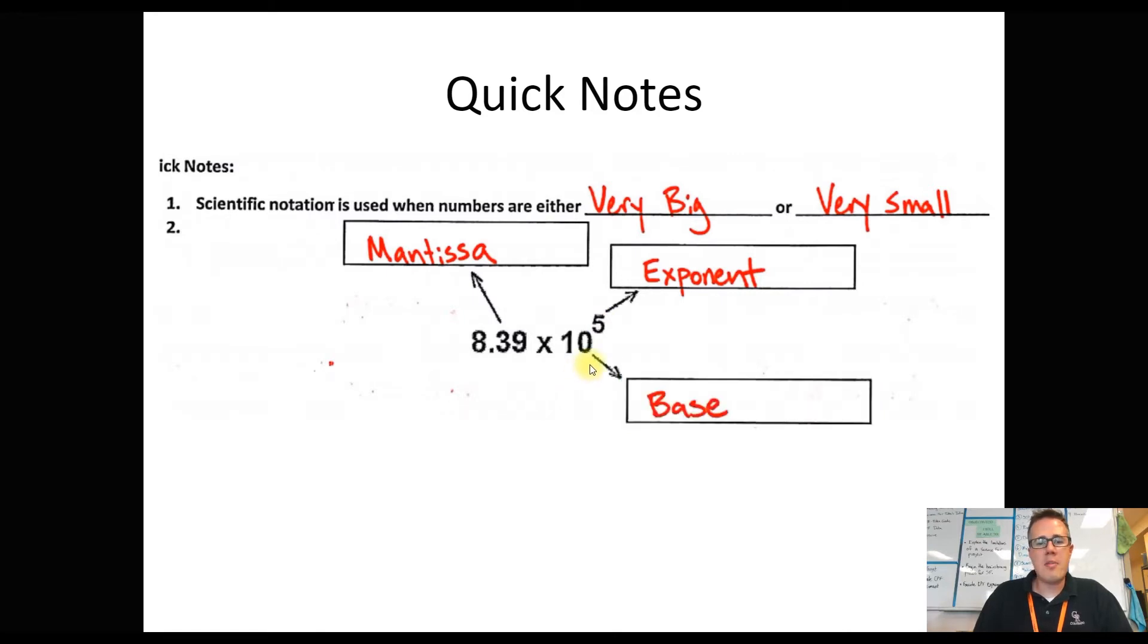You're going to learn later on in math, probably when you get into high school, maybe before, that there are ways to do scientific notation with a different base. In fact, all of computer science is based on base 2. So now we're going to learn how to use these numbers, mostly dealing with the mantissa and the exponent. Our base in this class is always going to be 10.